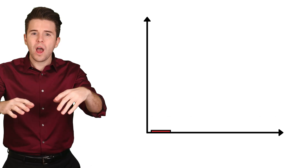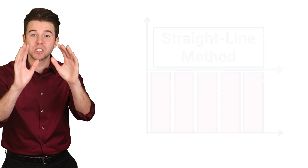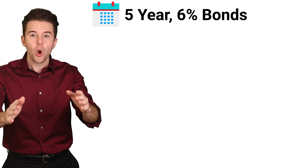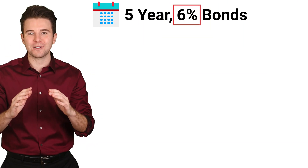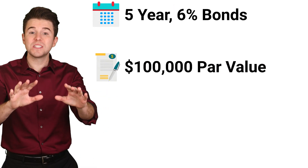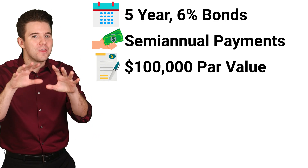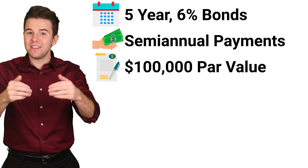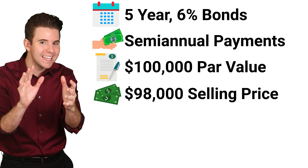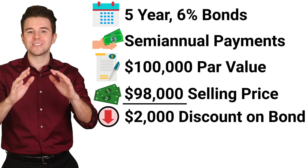In our example, we will show the straight line amortization method. Assume a business issues 5-year bonds on December 31st with a 6% annual contract rate. The par value of these bonds is $100,000 and includes semi-annual interest payments. However, the market rate for the bonds is higher than the contract rate, and therefore they sell at a discount price of $98,000. In this case, we have a discount of $2,000.